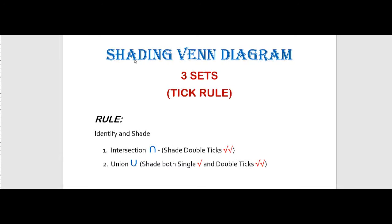Today we are going to discuss how to shade Venn diagrams in which 3 sets are involved. The rule we use here is called the tick rule. In this tick rule, we first identify the sets by ticking the areas where those sets are involved. If it is a case of intersection, we shade where double ticks are involved. In case of union, we shade both single tick and double tick regions. Let's see with examples how to use these rules.